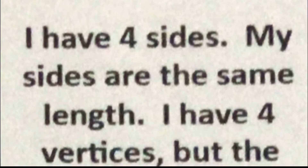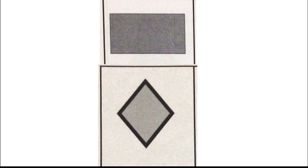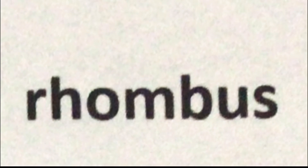The next shape puzzle is: I have four sides. There are lots of shapes which have four sides — they're called quadrilaterals. My sides are the same length. I have four vertices, but the angles are not all the same. When I first saw this, I said 'angels,' but then I was like, oh, never mind, that's angles. Your options are a rectangle and a rhombus. If you picked a rhombus, you're correct.